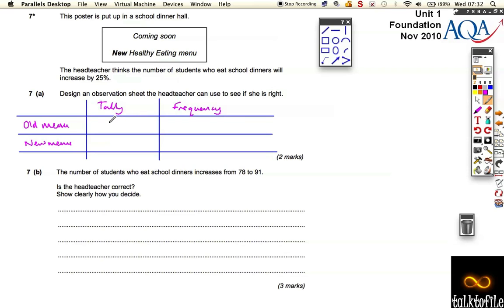OK, so she can put the tally in, tally it on a particular day and then find the frequency of that, find the tally of the pupils eating the new menu and then she can use that to help her find out whether she was right or wrong. And they might just add a little total there. Nice easy two marks.